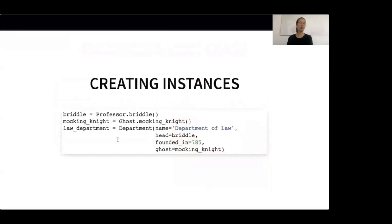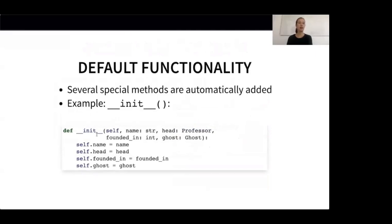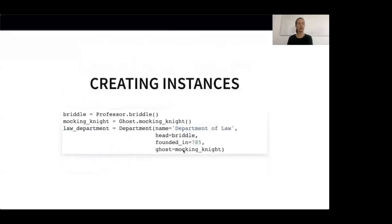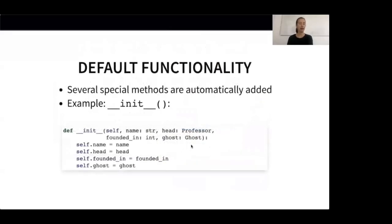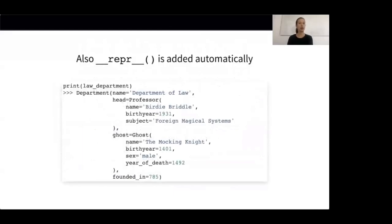When defining the department class as a data class, Python automatically adds several special methods to the class. For example, the class includes the __init__ method under the hood — all we had to do is list the attributes of our department class, and Python takes care of the rest. The __init__ method is created automatically under the hood. Python also added a __repr__ method to the department class, so when printing the law department instance, we get a nice representation right away. By automatically adding these dunder methods, data classes release us from the burden of having to define them ourselves. We could, of course, still override the default implementation if needed, but most of the time that won't be the case.